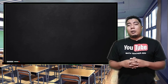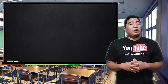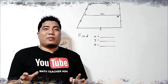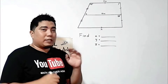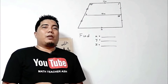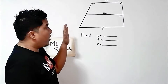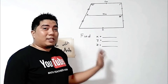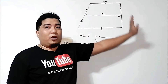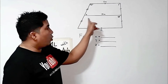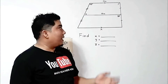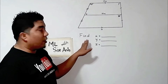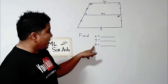For you to understand deeper on solving problems involving trapezoids, let us go to our discussion board. We are now on our first figure. This is a non-isosceles trapezoid because the legs are not equal. However, in this figure, you can also see a median that is being drawn. The problem here is: how do we find the value of x, y, and z?